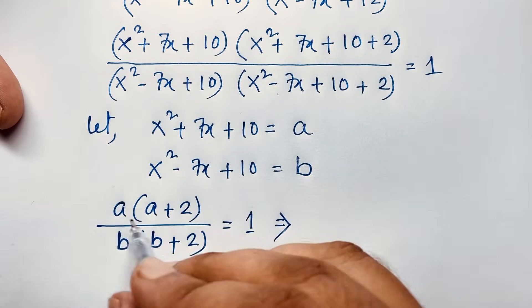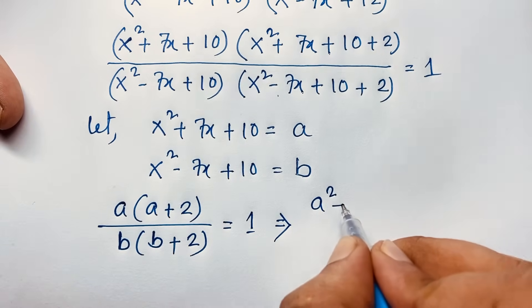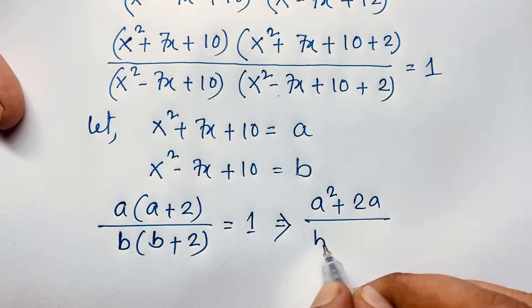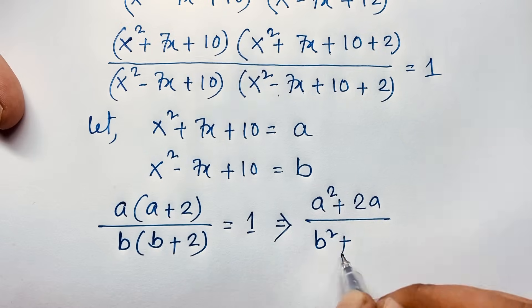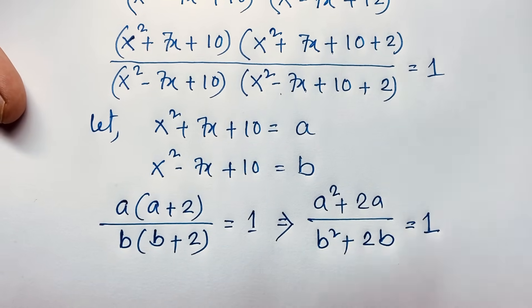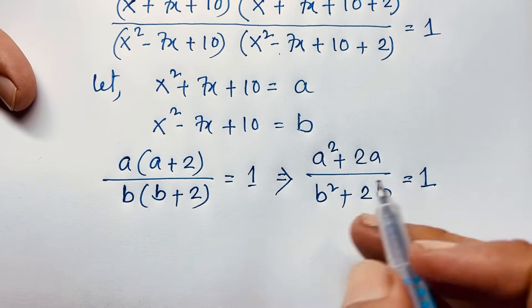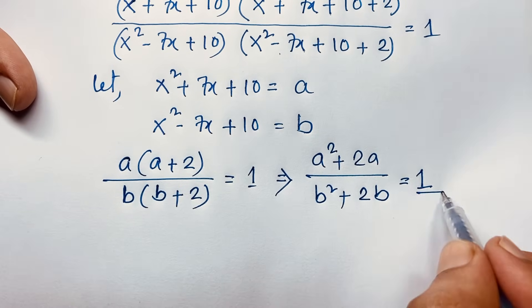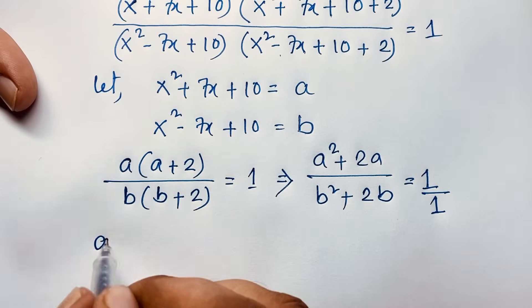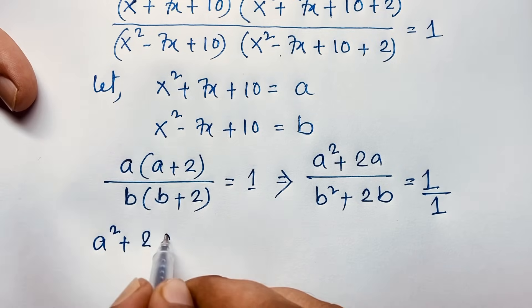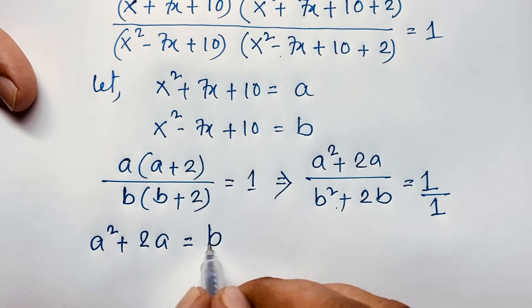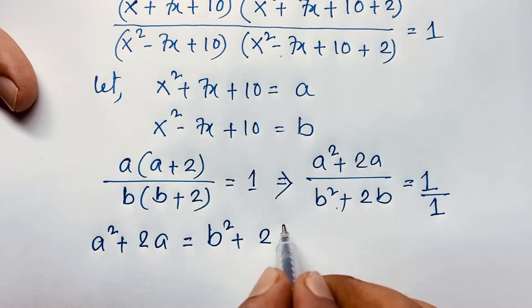Now this expression becomes (a²+2a) over (b²+2b) equals 1. Then if I cross-multiply, a²+2a equals b²+2b.